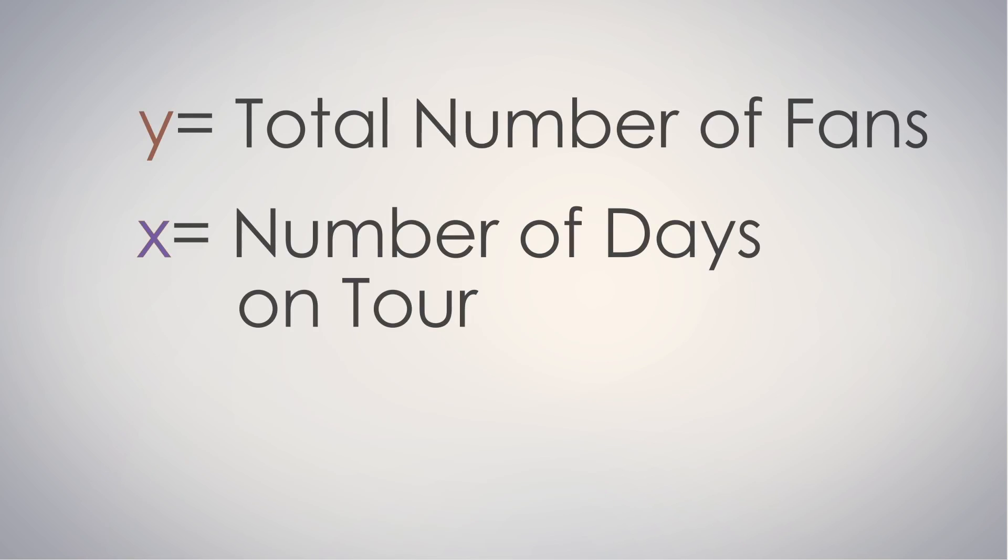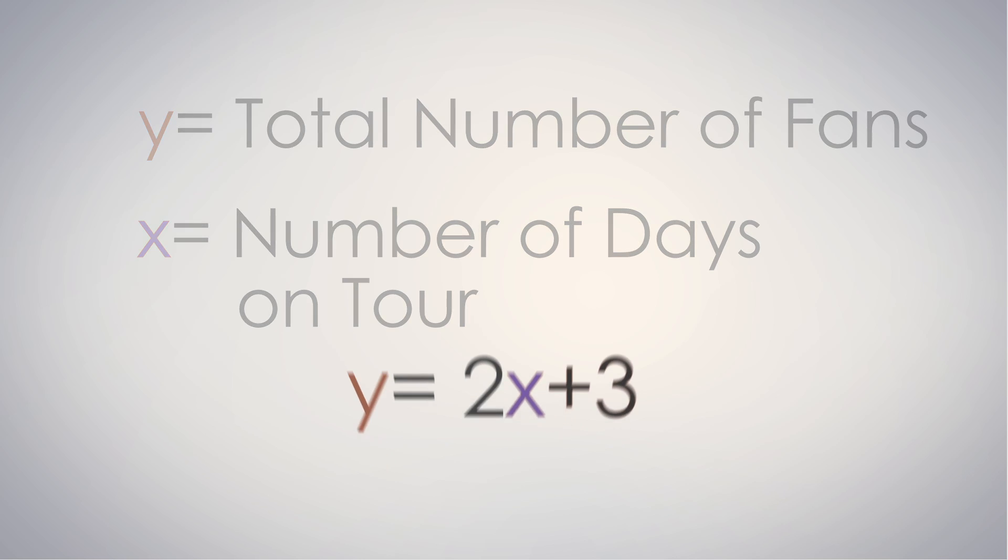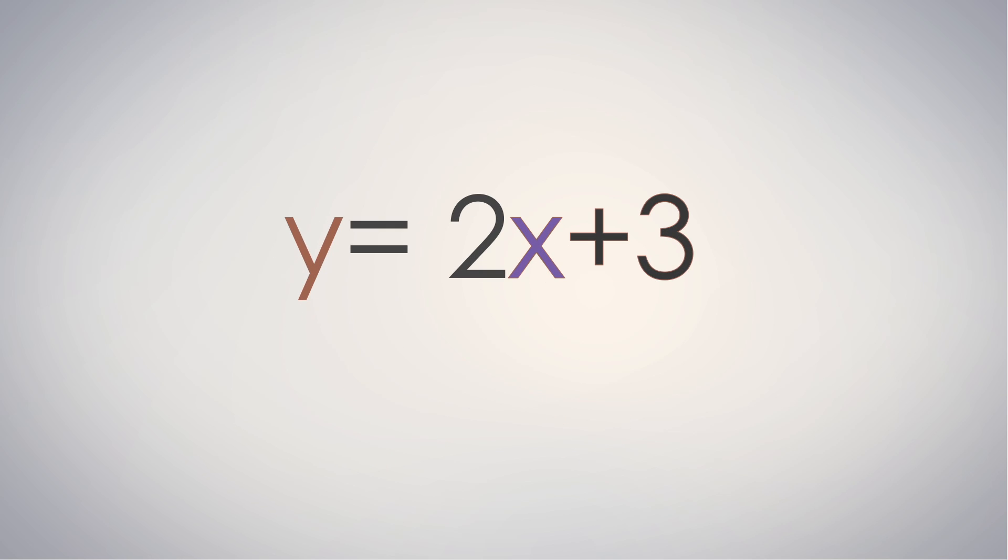To figure this out, let's first assign some variables for this function. For the purpose of graphing, we'll use y for the total number of fans and x for the number of days on tour. Therefore, the function would be y equals 2x plus 3. In this function, the constant rate of change is two new fans per day, with an initial amount of three fans.